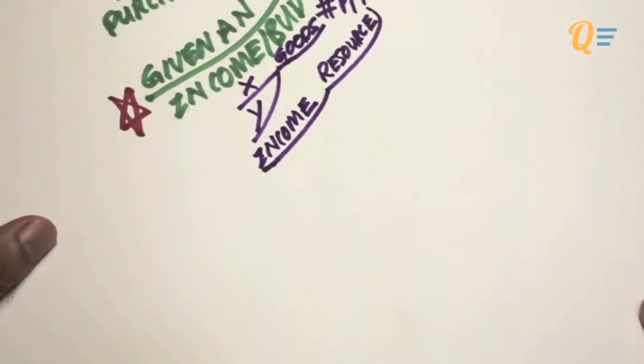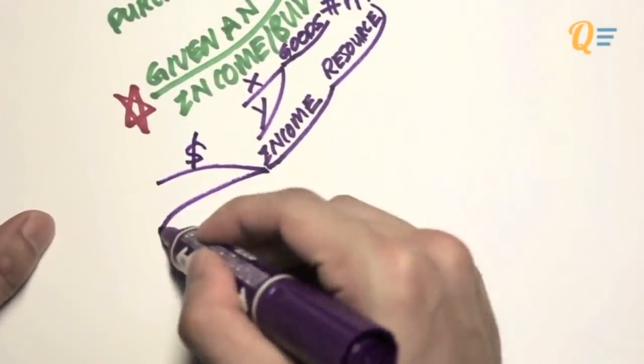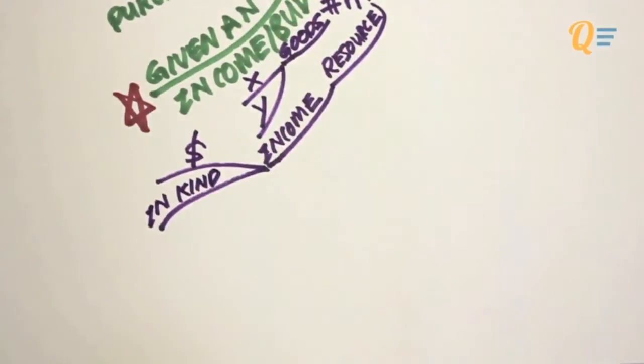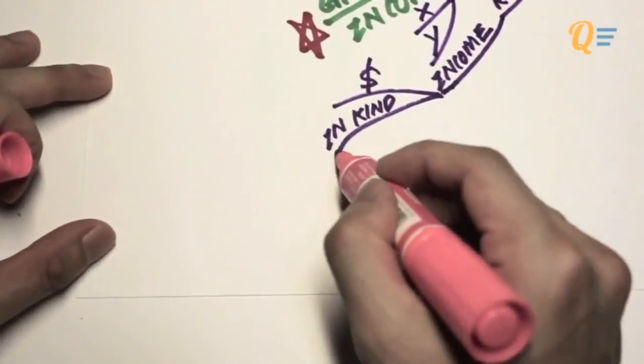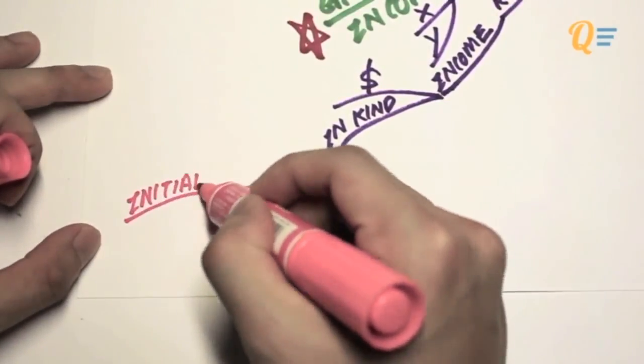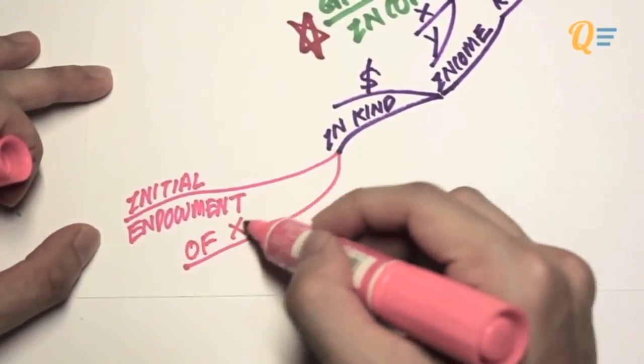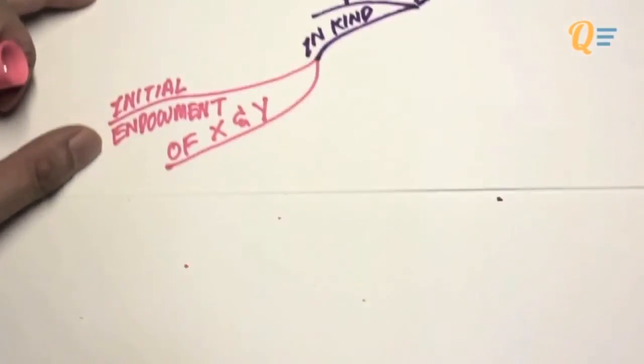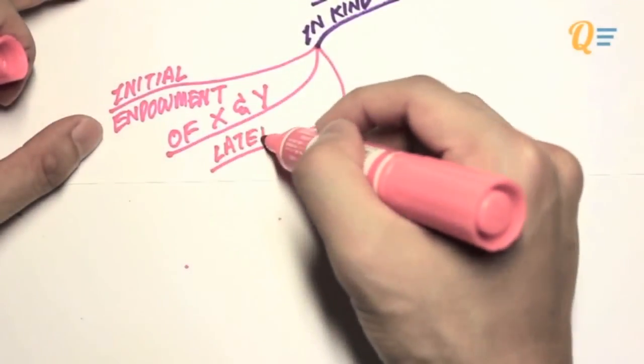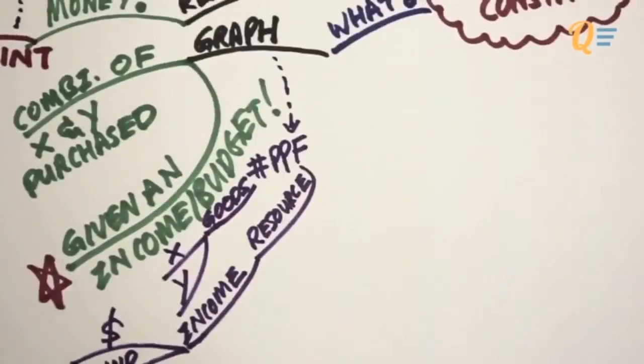Typically, income comes in the form of money, but we've got income in kind as well. What is income in kind? It refers to the initial endowment that a consumer has from the very beginning, an endowment of X and Y. So it's basically you are born with this amount of X and Y. We'll talk about this later in the chapter.